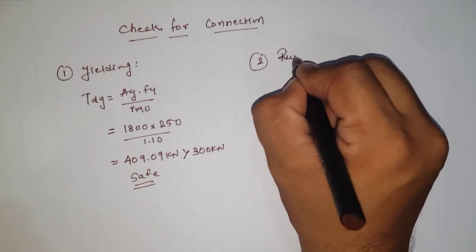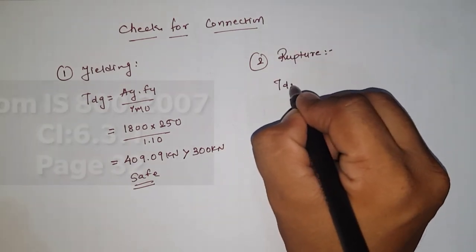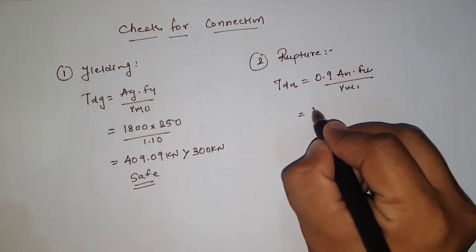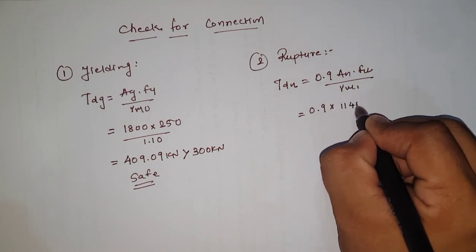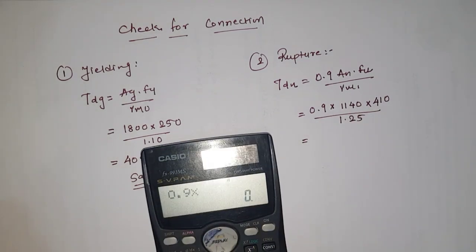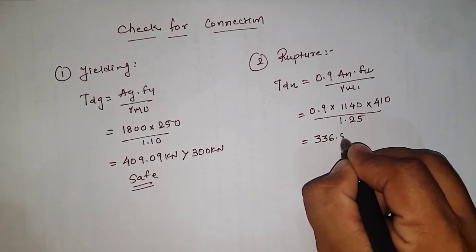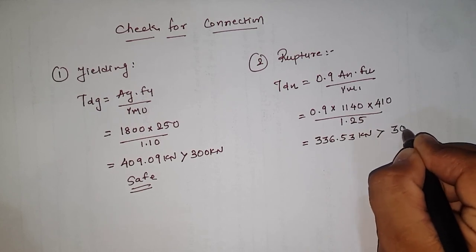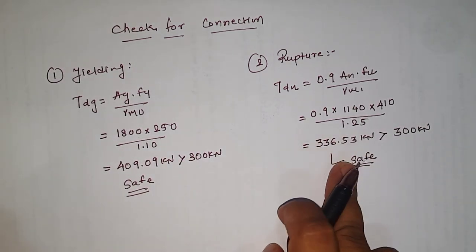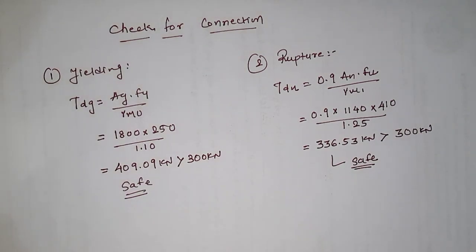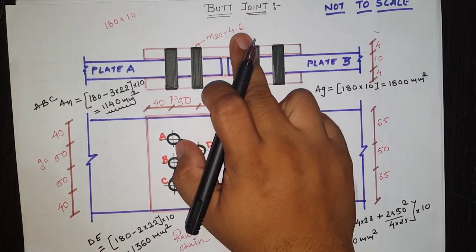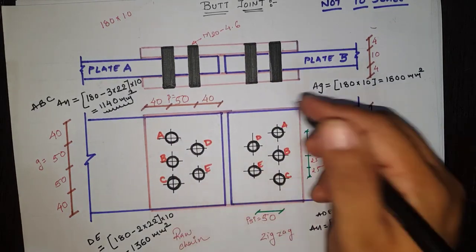Second check is rupture: Tdn = 0.9 × An × fu / γm1 = 0.9 × 1140 × 410 / 1.25 = 336.53 kN, which is much greater than the design load. Both criteria — yielding and rupture — are satisfied. Therefore, for the 180 × 10 mm plate with M24 4.6 grade bolts arranged as shown in the figure, the design is safe.